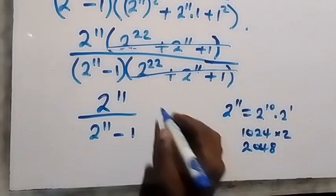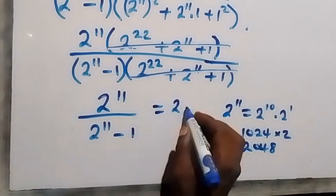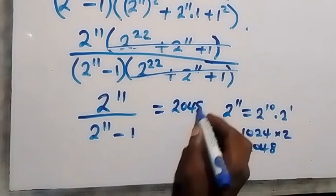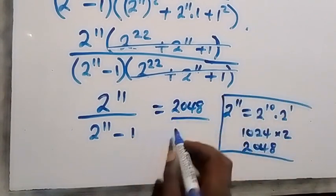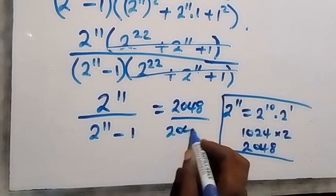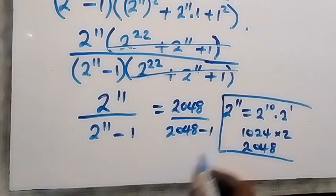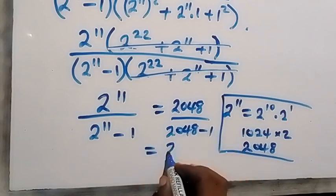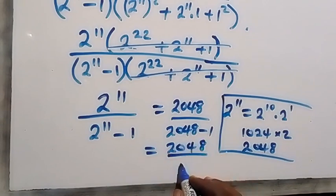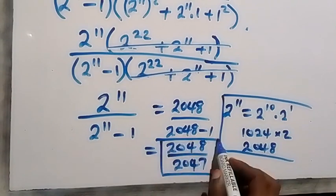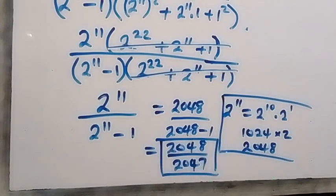So we can say this equals 2048 divided by 2048 minus 1, which gives us 2048 divided by 2047. So the final answer to this given problem is 2048 divided by 2047.